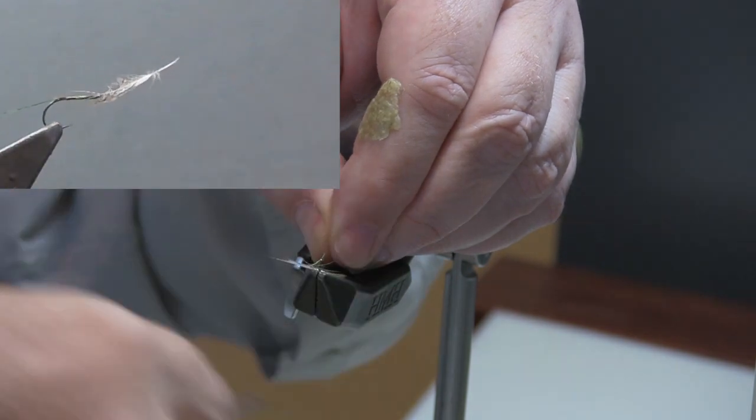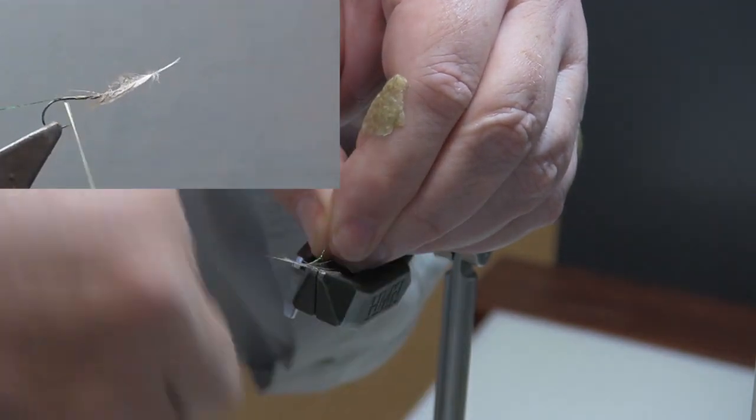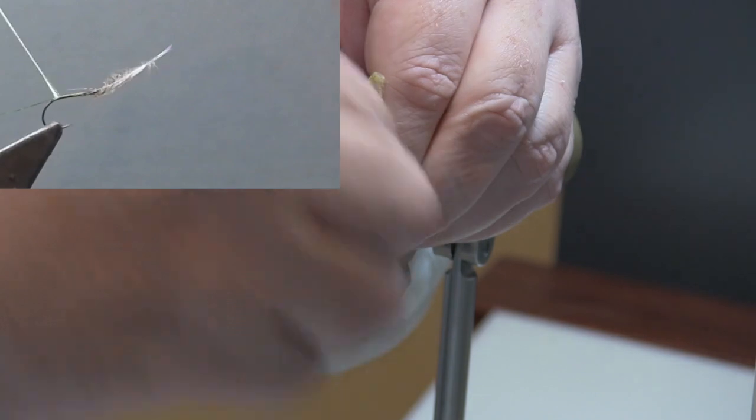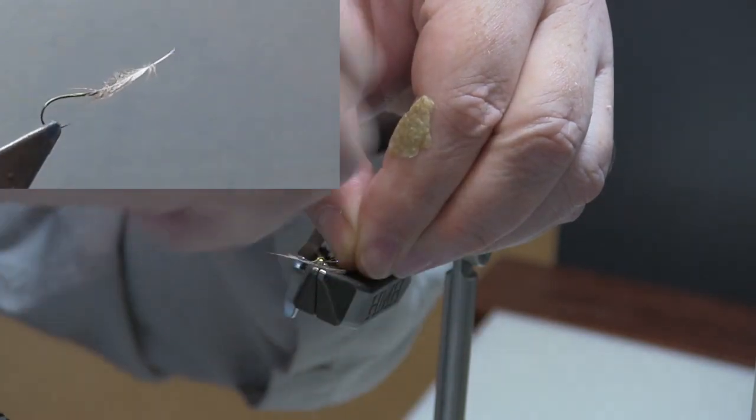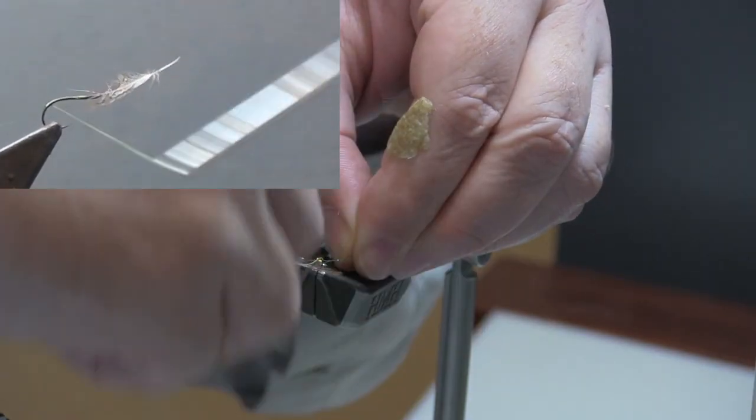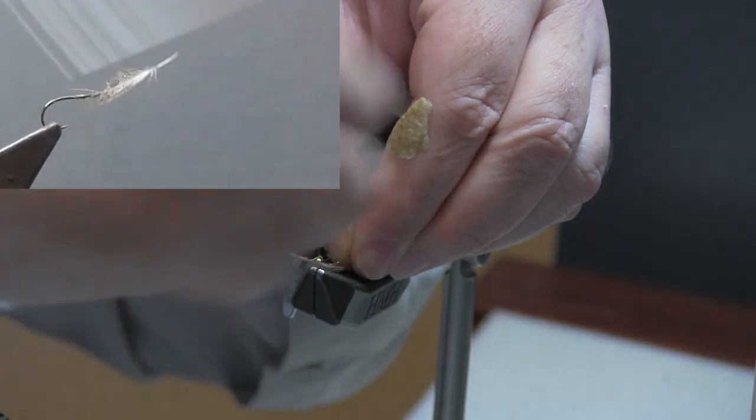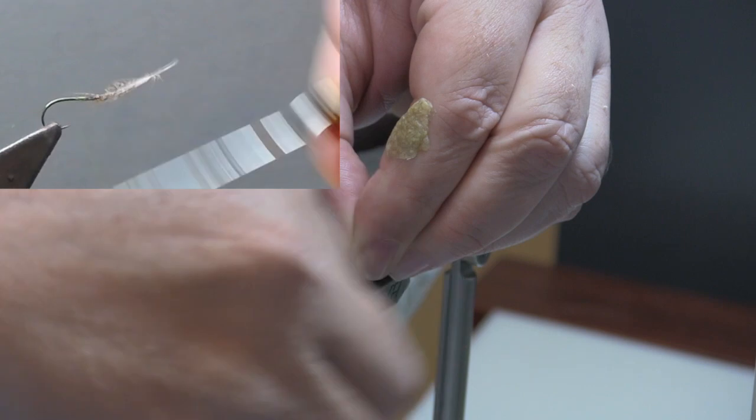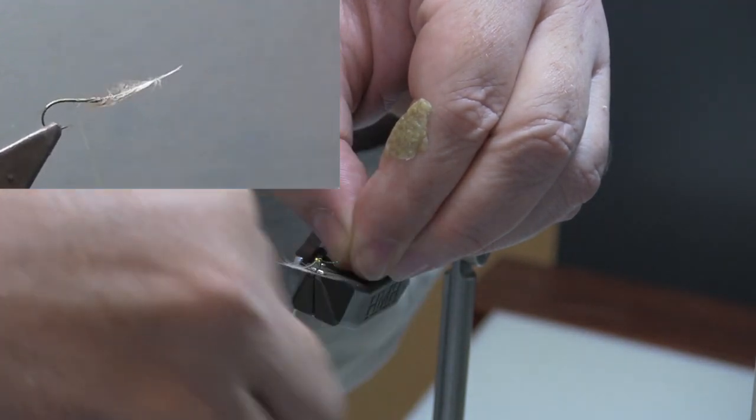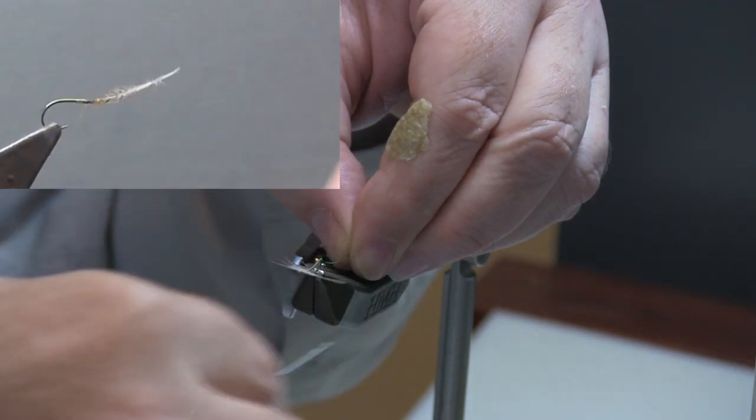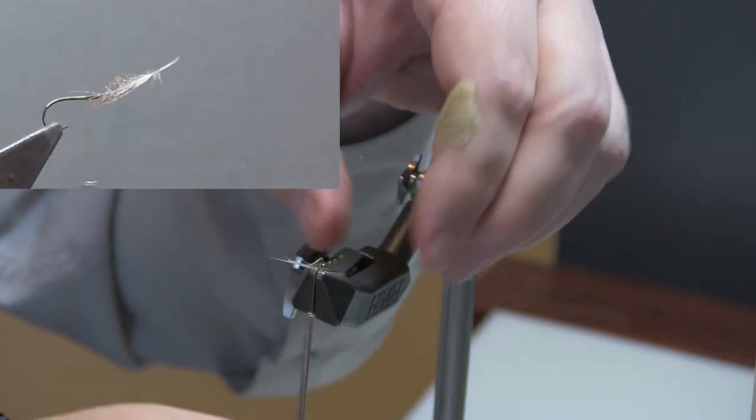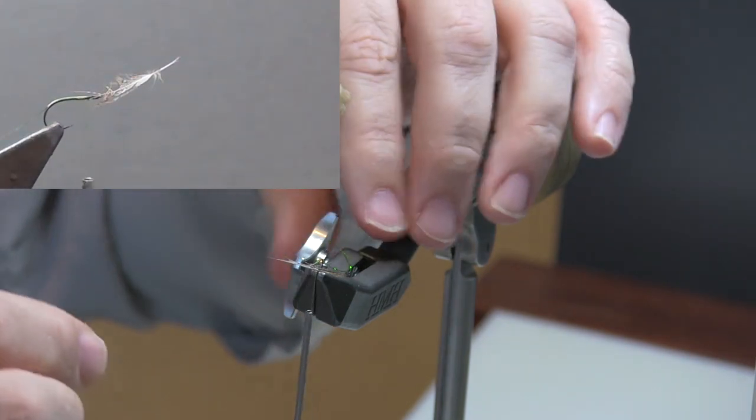So I bound that in on the back side of the hook, and now I am just painting the hook with a layer of thread. And you can do this fly with an orange thread body or a yellow thread body or black. You can go with any number of options here. The body on this should be quite thin, so you don't have to worry about building up any sort of taper to speak of.